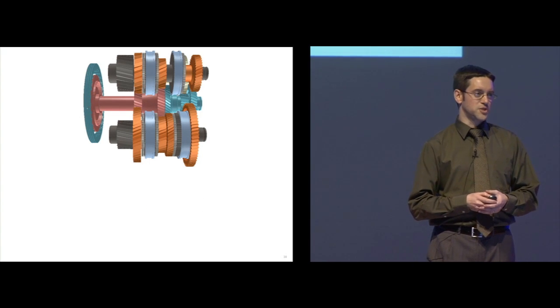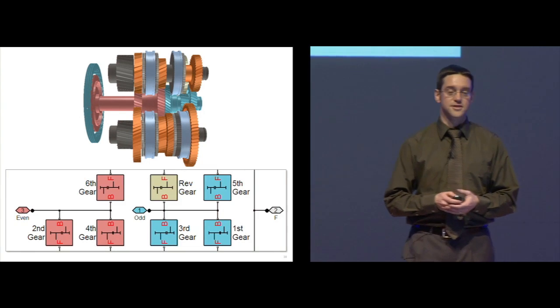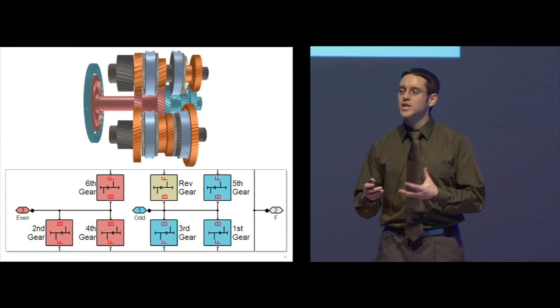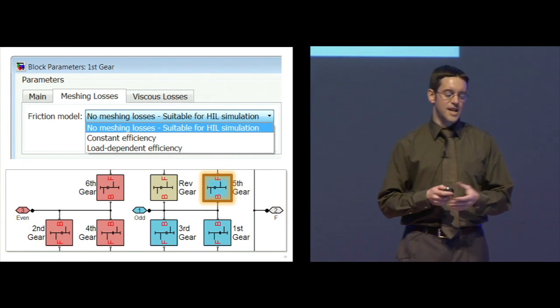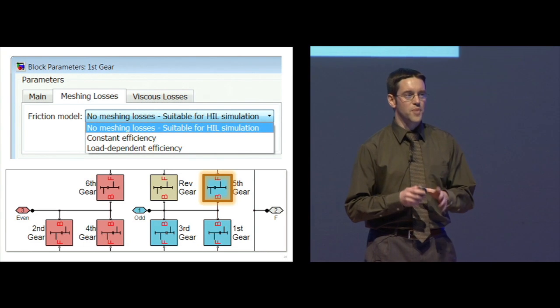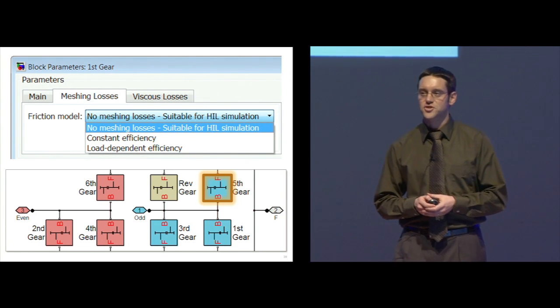The gears in the dual clutch transmission are modeled with the gear block in SimDriveline. If I would like to add losses to the gear system, I can simply enable them within the block and my diagram remains easy to understand.